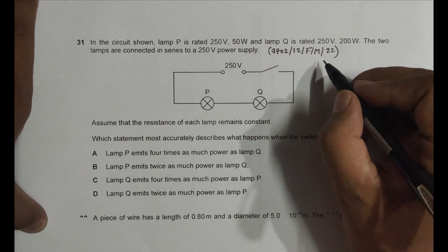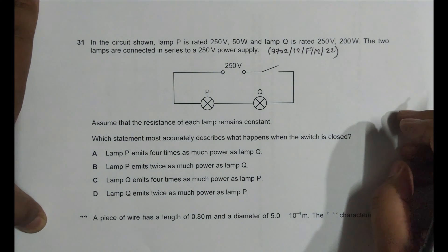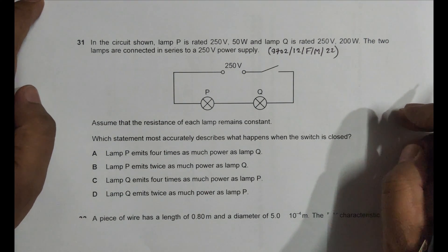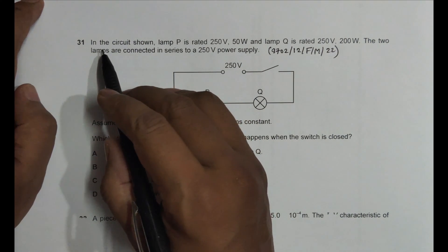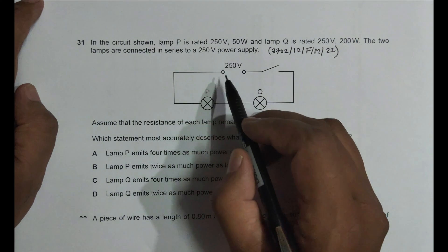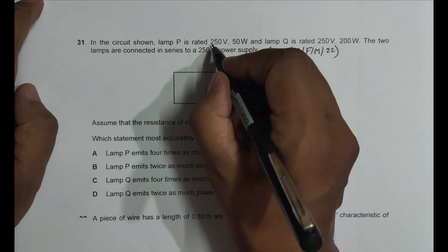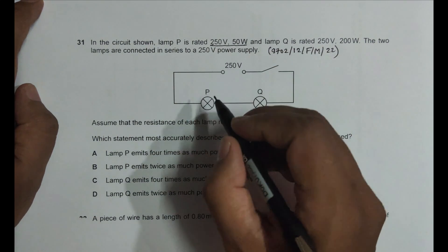Hello folks, this is a 2022 February March session paper one two, question number 31. This question is concerned with the chapter current electricity. In the circuit shown, lamp P is rated at 250 volt, 50 watt.